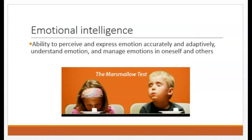Both Sternberg and Gardner had categories within their theories related to social intelligence. Daniel Goleman coined the term emotional intelligence — the ability to perceive and accurately express emotions, understand emotions, and manage emotions in oneself and others. This idea of emotional intelligence does seem to be predictive of success.